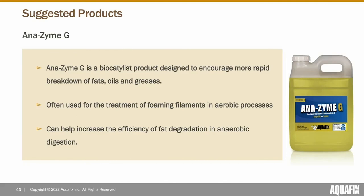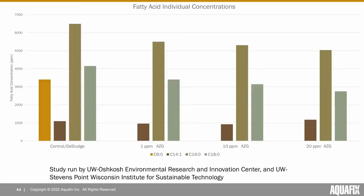We just started a new line of anaerobic products including Anazyme G and Anazyme P to aid in anaerobic digestion. These are biocatalyst products. Anazyme G is designed to facilitate a more rapid breakdown of fats, oils, and greases into short-chain fatty acids, hopefully accelerating anaerobic digestion. This is similar to a product used for aerobic digestion processes and can help increase the efficiency of fat degradation. We have data from a study run partnered with UW Oshkosh and UW Stevens Point showing individual fatty acid concentrations.